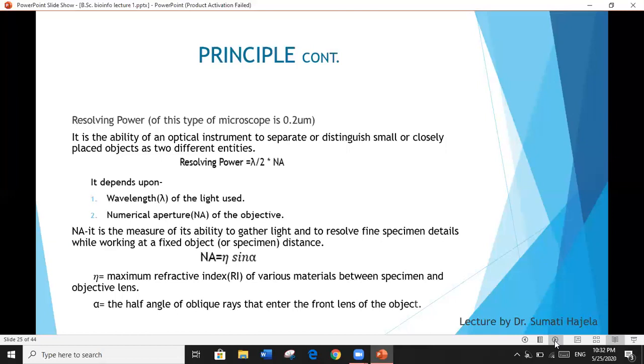It means numerical aperture. It is the measure of objective's ability to gather light and to resolve fine specimen details by working at a fixed object distance. If we try to calculate it, the formula will be Na equals eta sine alpha. Here, eta is the maximum refractive index of various materials between specimen and objective lens, while alpha is the half angle of oblique ray that enters the front lens of the objective.